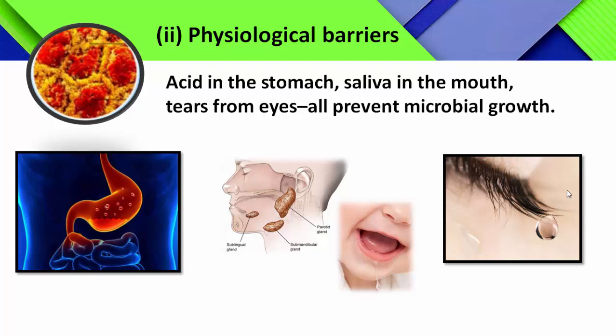The physical barriers are represented by skin and mucous membrane. Today I am going to explain about the remaining three types of barriers which are providing innate immunity: physiological barriers, cytokine barriers, and cellular barriers.